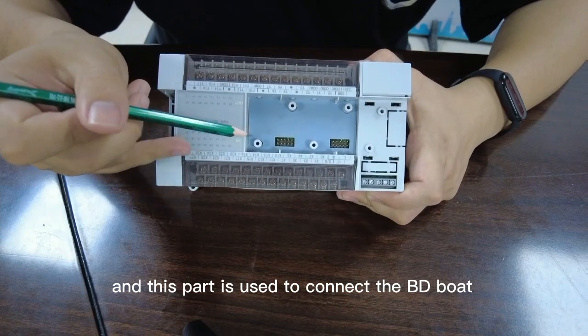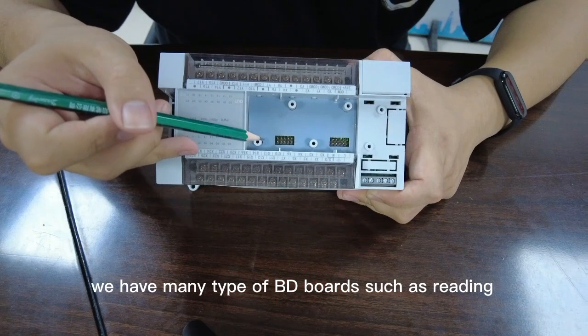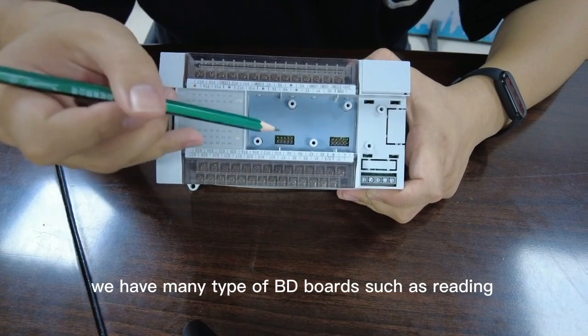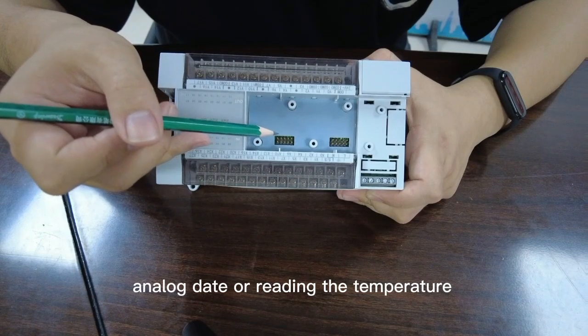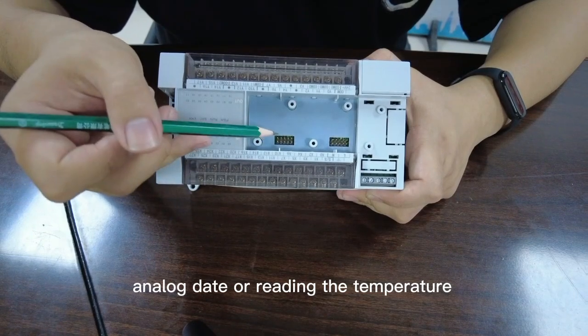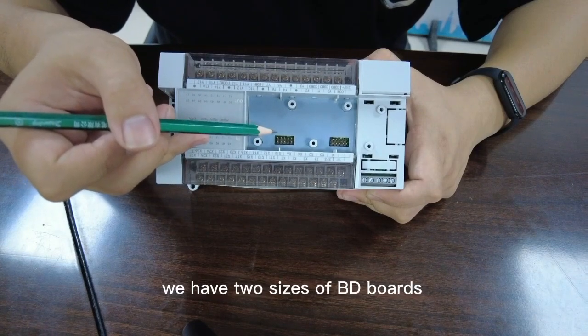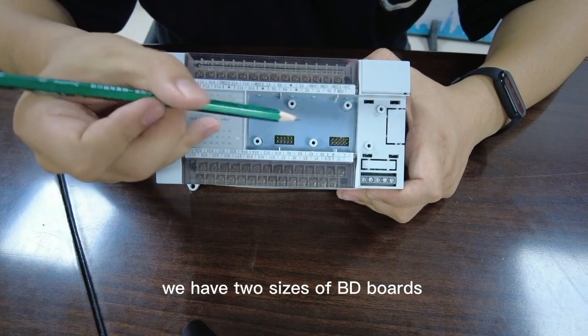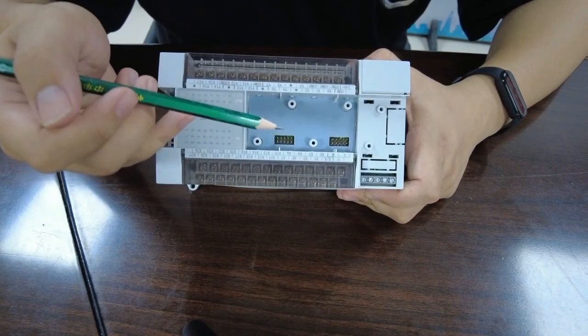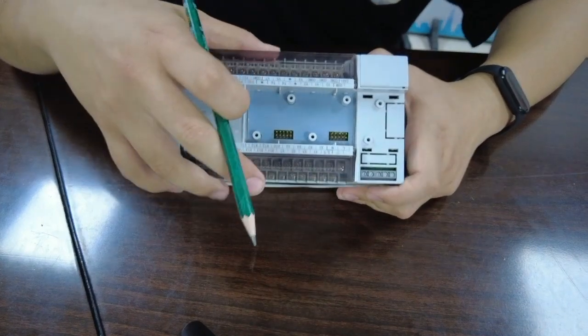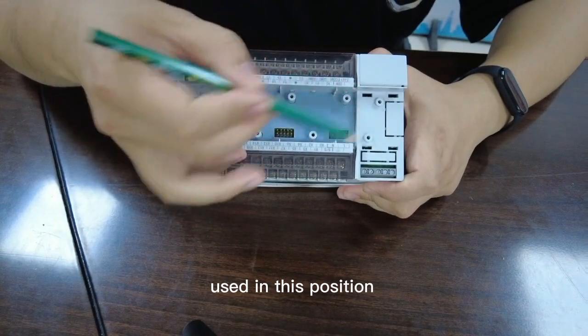And this part is used to connect the BD board. We have many types of BD boards, such as reading analog data or reading the temperature and adding communication ports. We have two sizes of BD boards. The BD boards can only be used in this position.